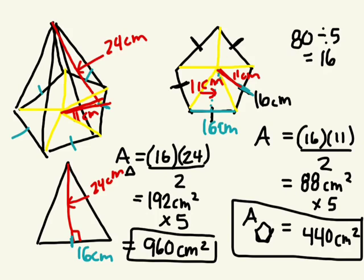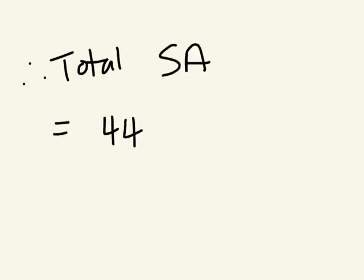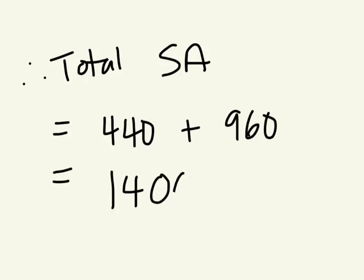Right. So we want to know the total surface area, so this plus this. Therefore, total surface area of this shape is 440 plus 960 equals 1,400 centimetres squared.